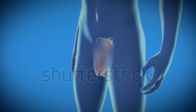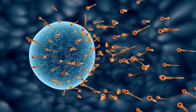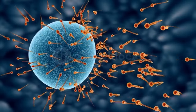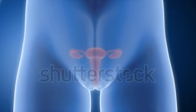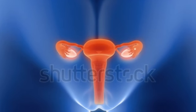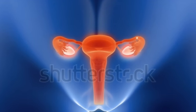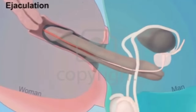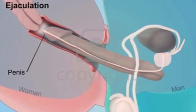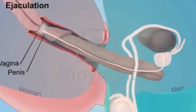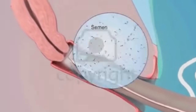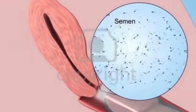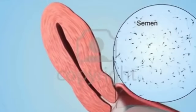The human reproductive system includes the male reproductive system, which functions to produce and deposit sperm, and the female reproductive system, which functions to produce egg cells and to protect and nourish the fetus until birth. Human reproduction usually involves internal fertilization via sexual intercourse, in which the male inserts his penis into the female's vagina and ejaculates semen which contains sperm.